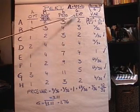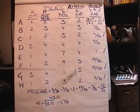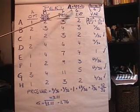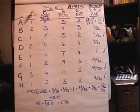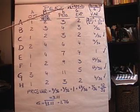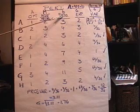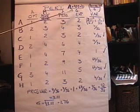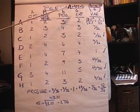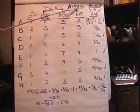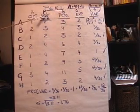In the next column what we've got is the expected time then. The expected time is calculated by taking A, which is the optimistic, plus 4M, which is the most probable, plus B, the pessimistic, and divide that by six. So it's like a weighted average. You're putting a weight of one on the A, and a one on the B, and a weight of four on the most probable.